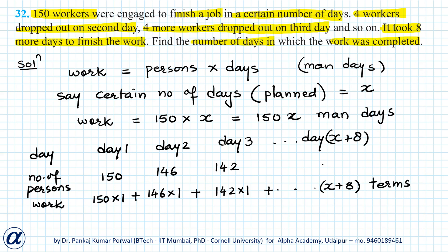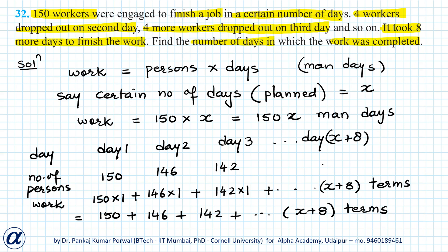If I simplify this, the total work equals 150 + 146 + 142 + ... up to x plus eight terms. Looking carefully, this is an arithmetic progression (AP) with first term 150 and common difference minus four, and there are x plus eight terms in this AP. I want to find the sum of this AP.